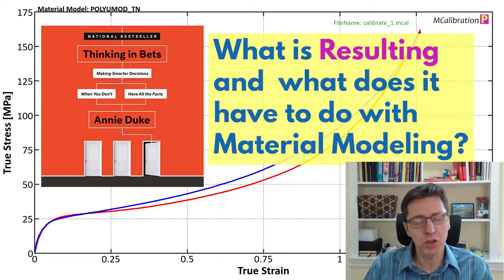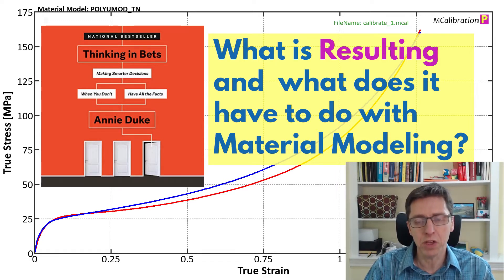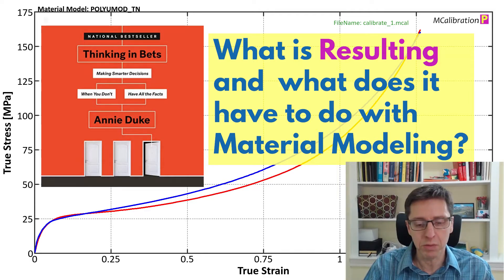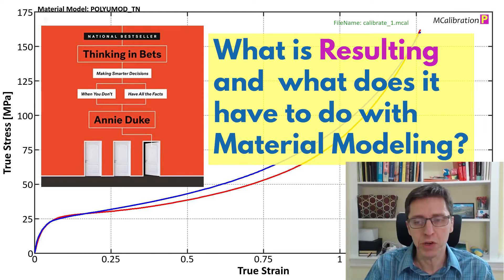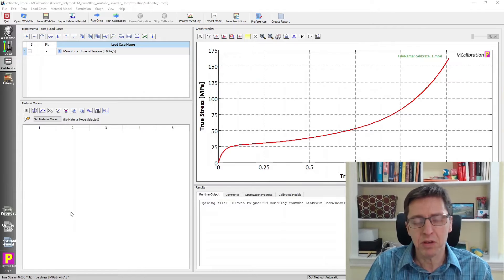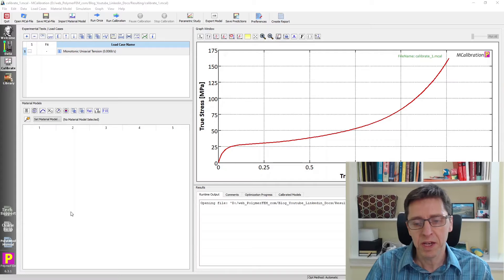But it doesn't mean that just because you lose, you made a bad decision. It was just an outcome due to chance — maybe it wasn't what you wanted, but it may have been the right decision for the situation you were in. This whole concept of Resulting is important also for material modeling. I want to talk about some of the traps that people fall into when doing material model calibration and selection, and how it relates to Resulting.